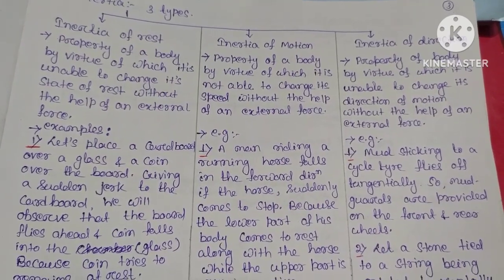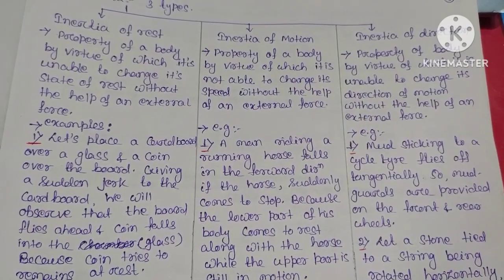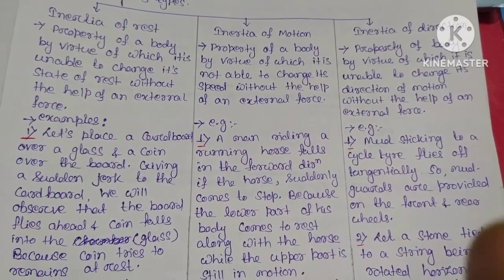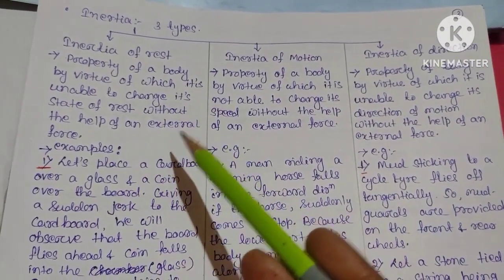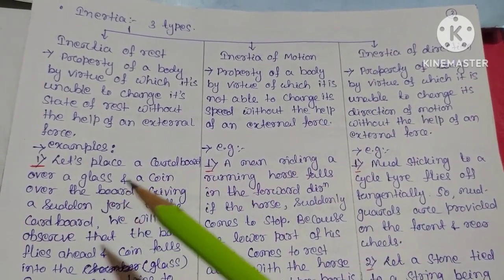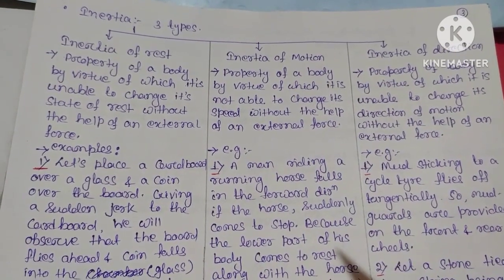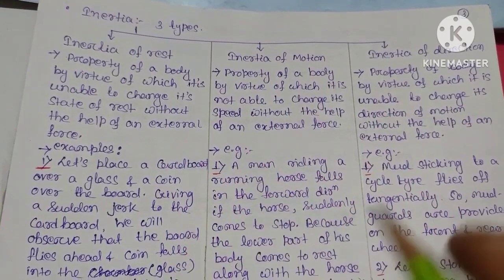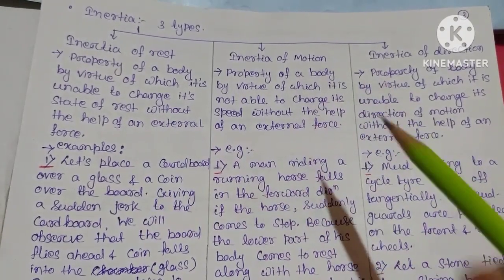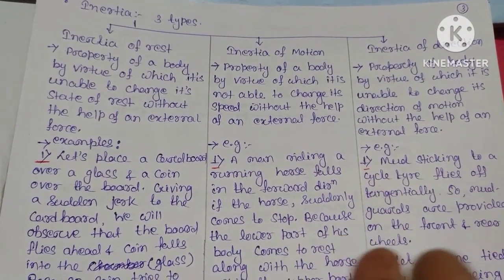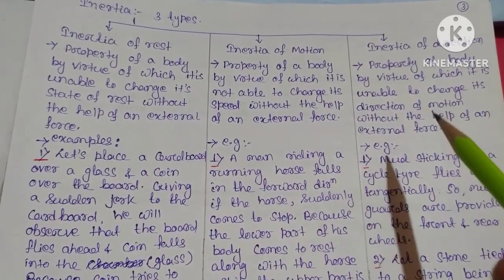Newton's first law states that an object at rest stays at rest and an object in motion stays in motion. There are three types of inertia: inertia of rest, inertia of motion, and inertia of direction. Inertia is the property of a body.